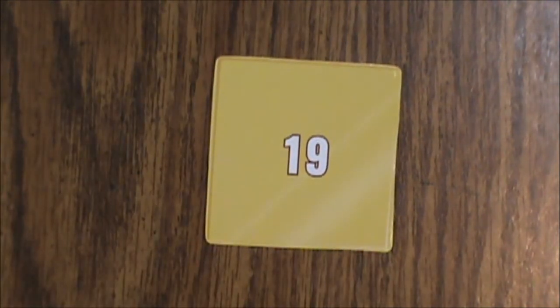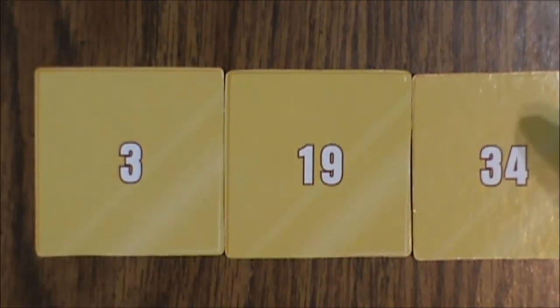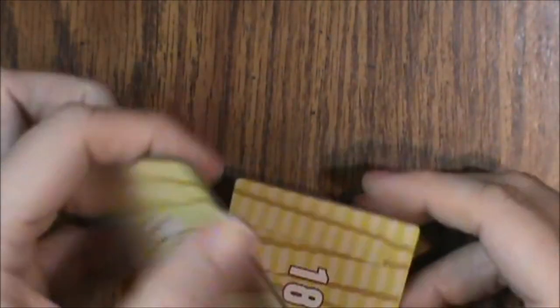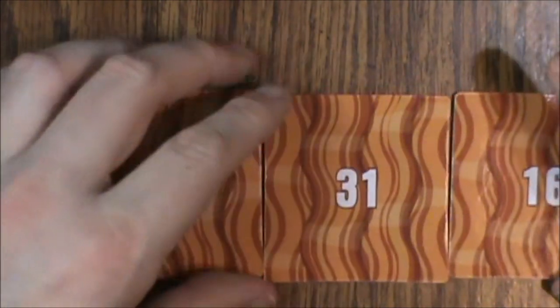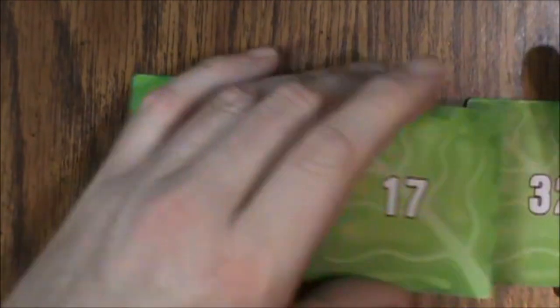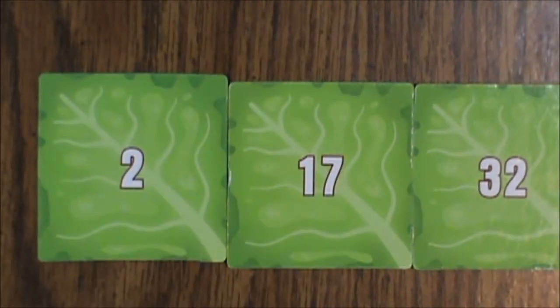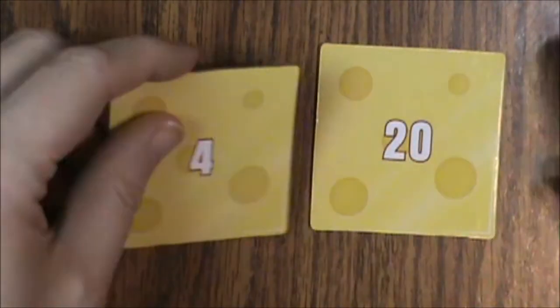Finally, the square ones. So we've got three of these different numbers, and then we've got two fries, 33 and 18. Then we've got three bacon, which are 1, 31, and 16. Then three lettuce, which are 2, 17, and 32. And two of the Swiss cheese, which are 4 and 20. So 13 of these total.